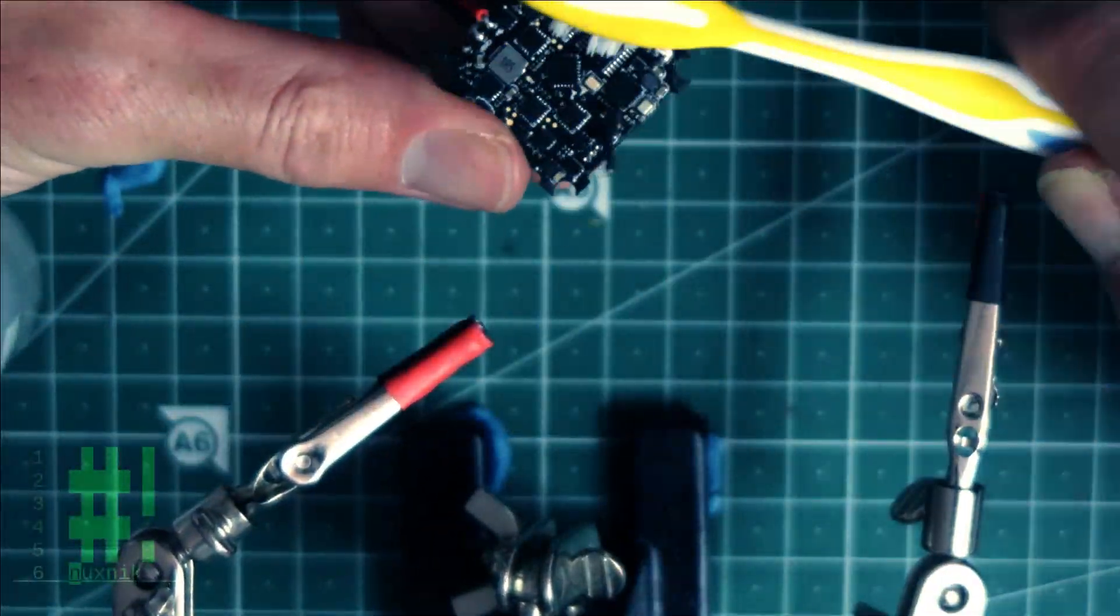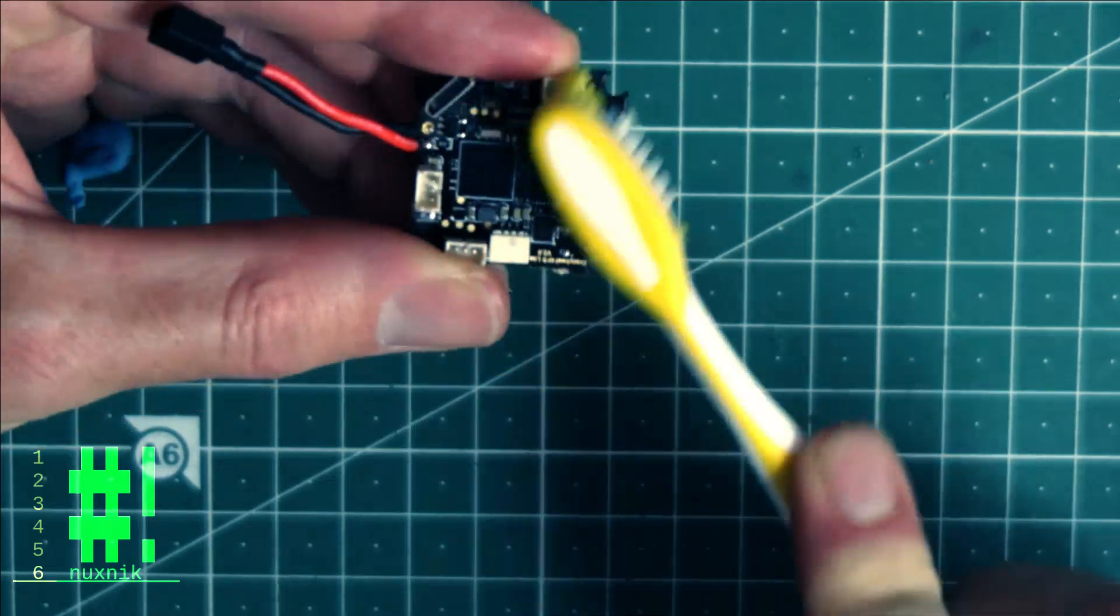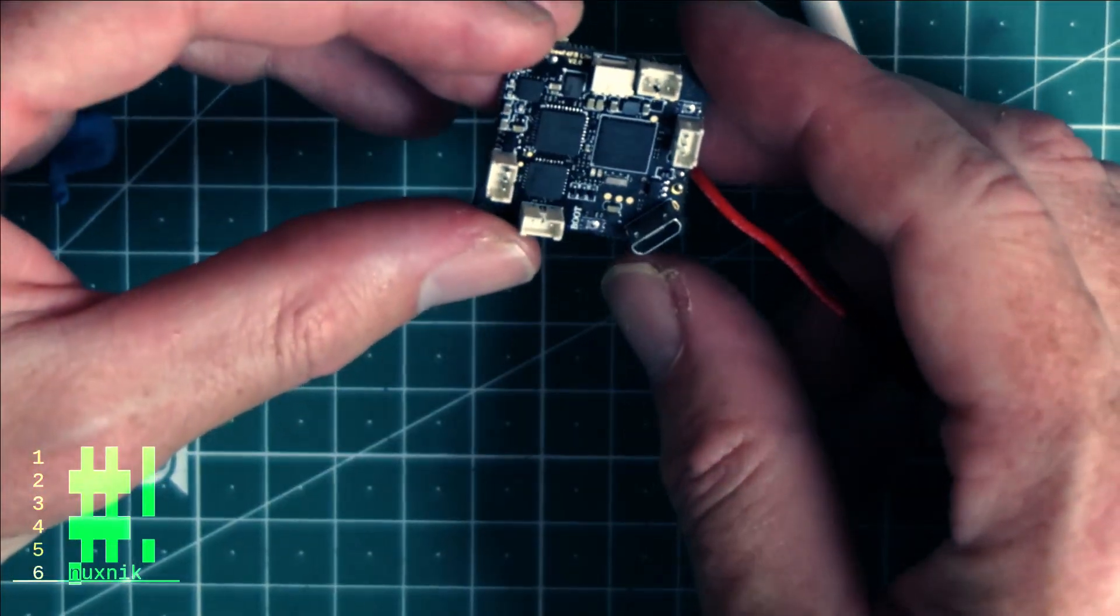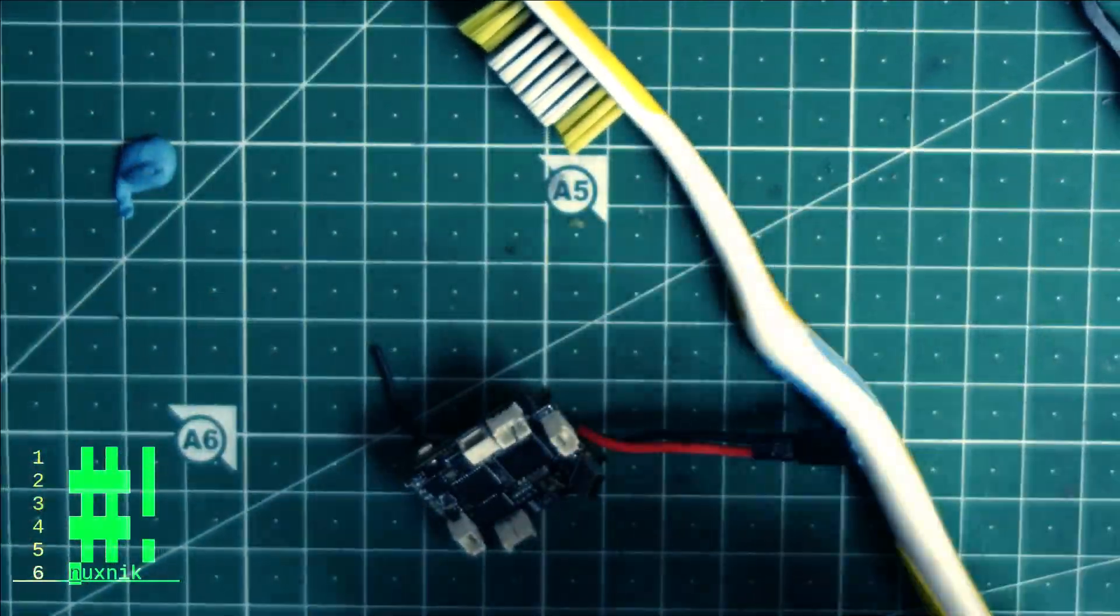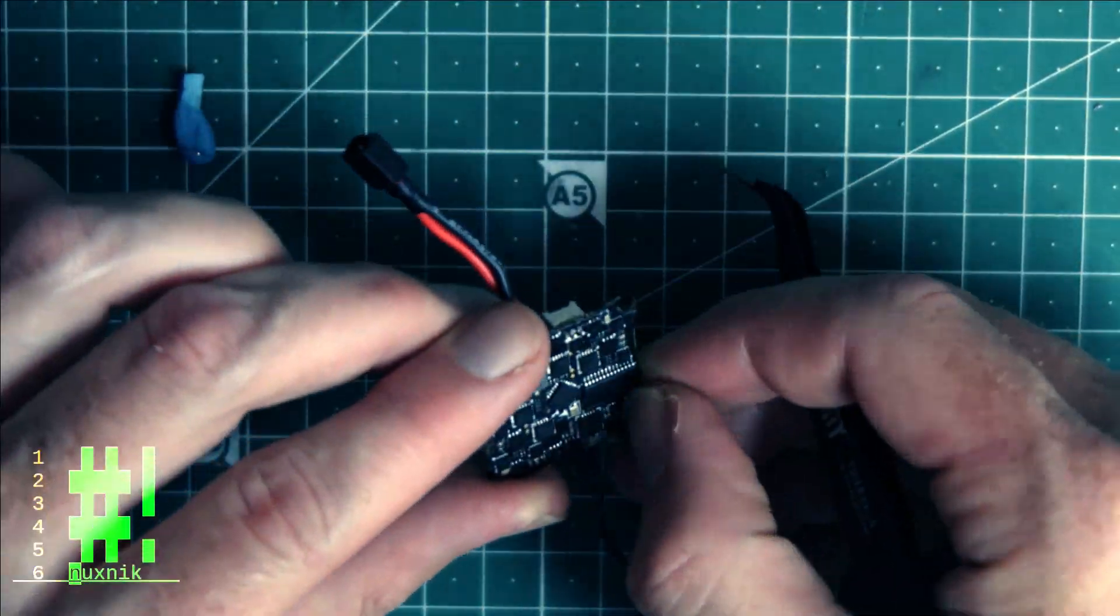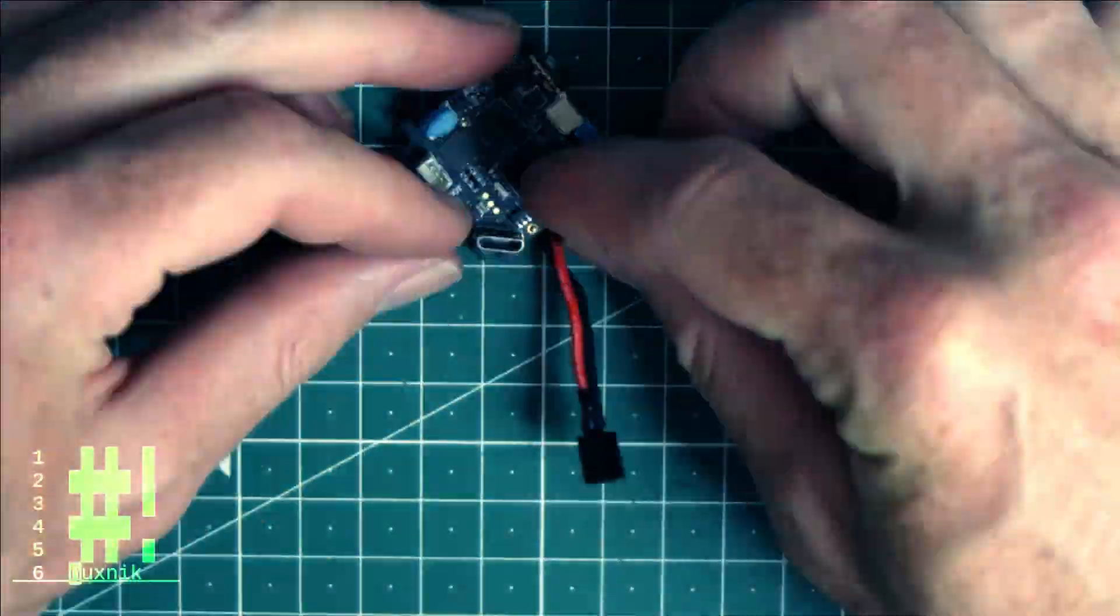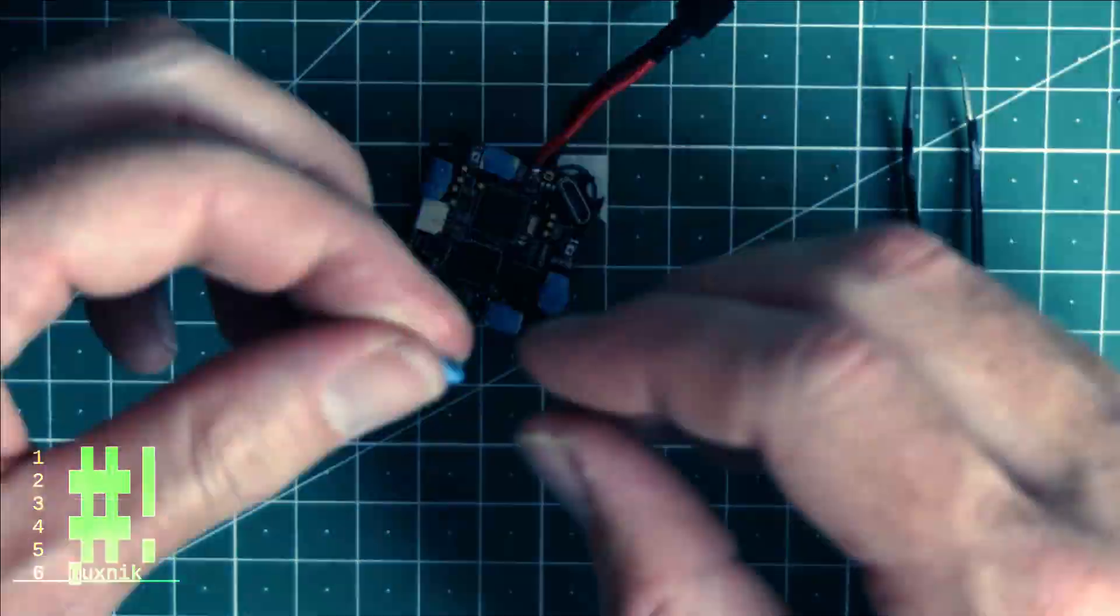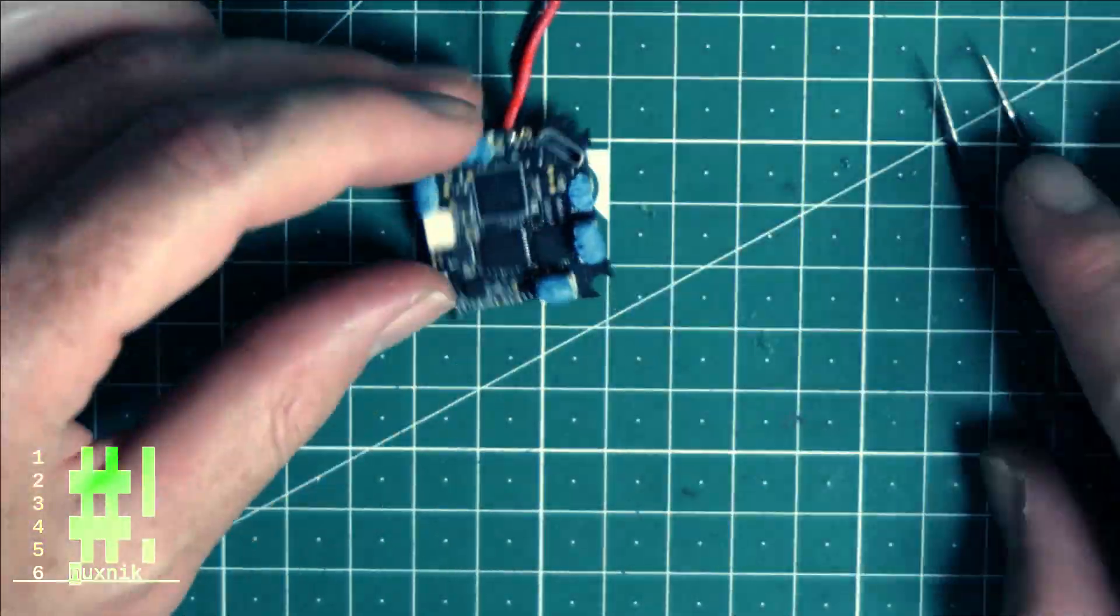I have been using MG Chemicals 422C silicone conformal coating for years and am happy with its performance. One bottle will last you quite a long time. Before applying, remove dust and oil with isopropyl alcohol and a toothbrush. Conformal coating can insulate connections and cause your board to malfunction if you apply it to the wrong areas. Therefore, we will use BluTAC and cover all the components on the board that should not be insulated. Adding silicone conformal coating is not necessary. However, there are some benefits to adding it.